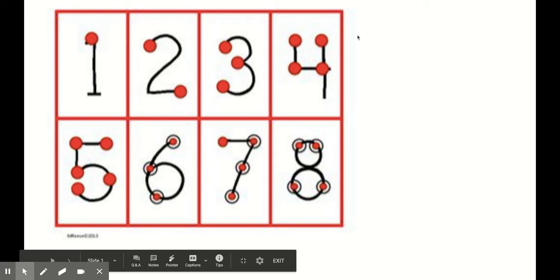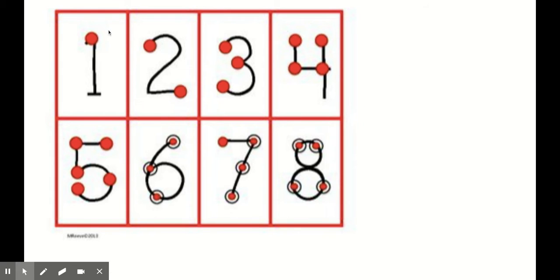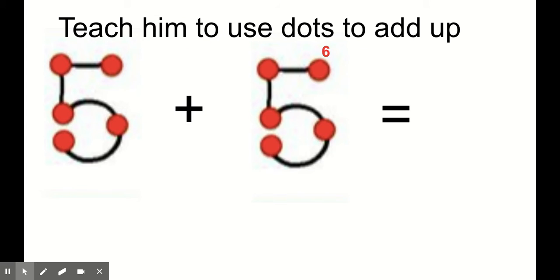This is a strategy where you teach kids to put dots on their numbers. For instance, if you had five plus five, you would count up from here. Here's five, and so you would go six, seven, eight, nine, ten.